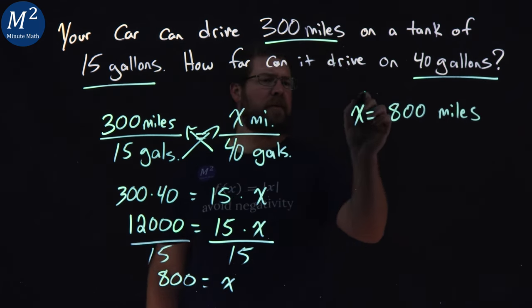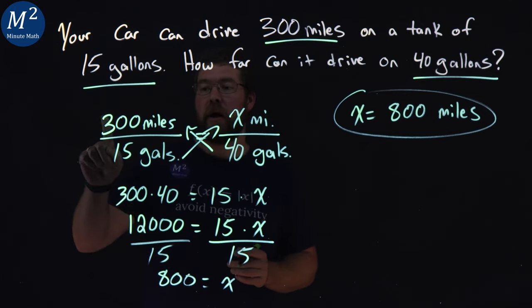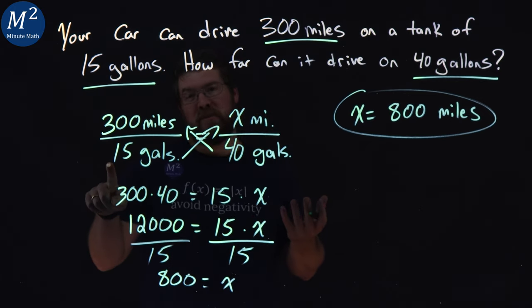Now in a previous video, we talked about the unit rate being 20 miles per gallon. We calculated that - 300 divided by 15 gives me 20.